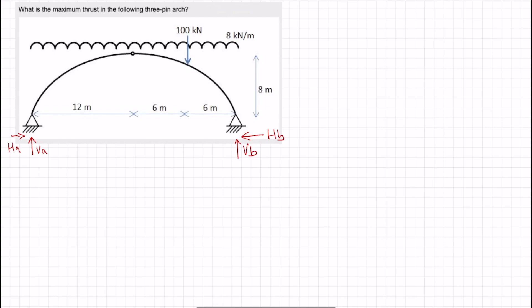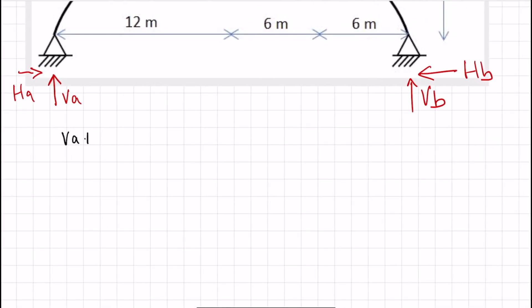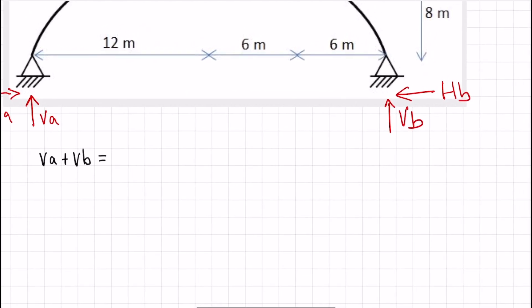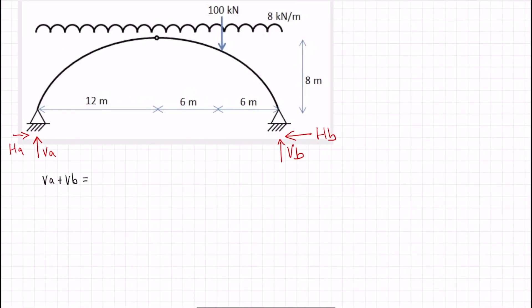We will know that VA plus VB, that's the upwards forces, will equal all the downwards forces. So we have a concentrated 100 kilonewtons plus 8 kilonewtons per meter times that length which is 24 meters. That will equal 108 times 24. Sadly my mental arithmetic is not that good. 24 times 8 is 192, so this will equal 292 kilonewtons in total.